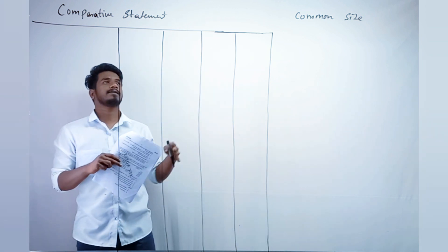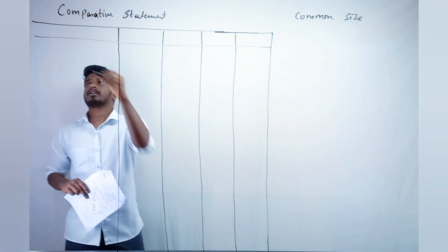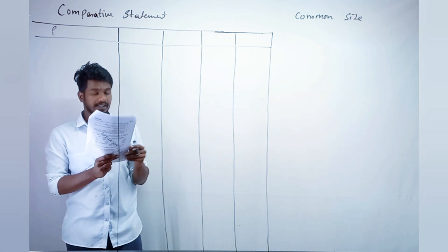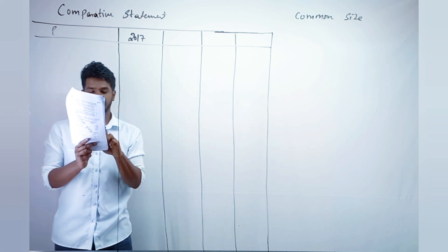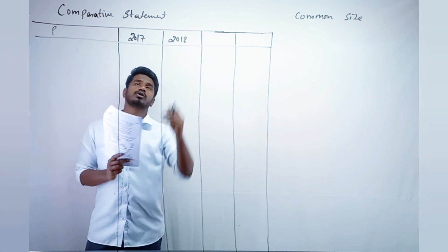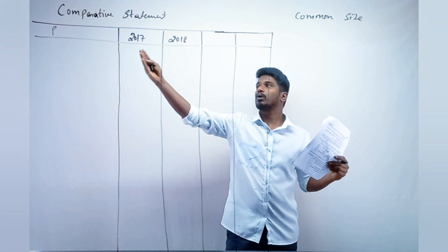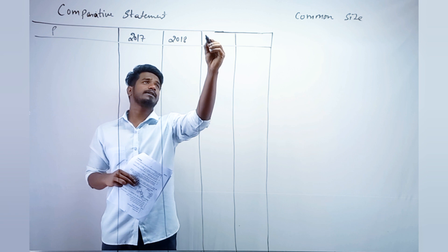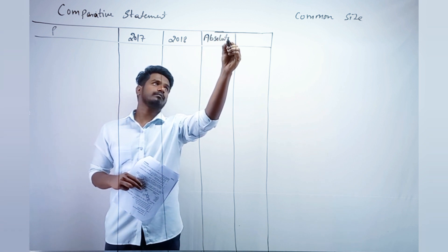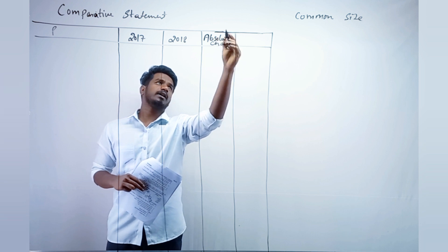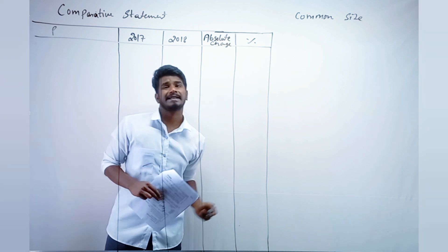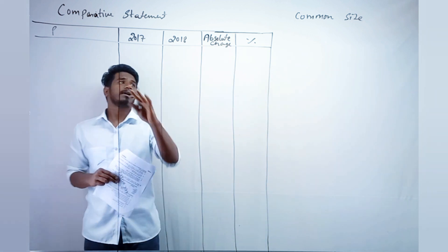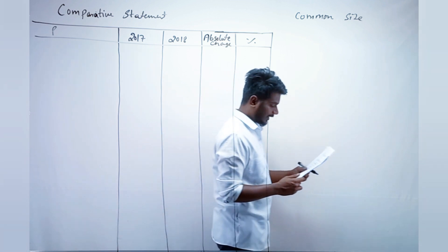This is the format you should write. Here you have 'Particulars', then columns for 2017-18 — write the base year, that is the oldest year first, then the newest year next. After that we have 'Absolute Change' and then 'Percentage Change' columns. That is the comparative statement format.